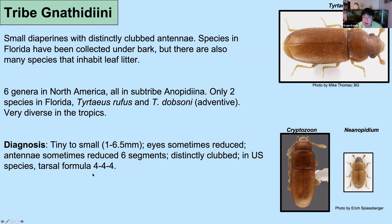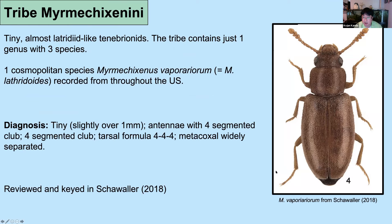Myrmechiixinini is a small tribe containing only three species and one genus. There's no native species in the US but there is a cosmopolitan widely distributed species. In older literature you'll see it referred to as Myrmechiixinus lathridoides, but this has been found to be a junior synonym of Myrmechiixinus vaporeorum, so make sure you have the updated nomenclature. These are very small tenebs — slightly over one millimeter — with a reduced tarsal formula and a very lathridoid-like shape.